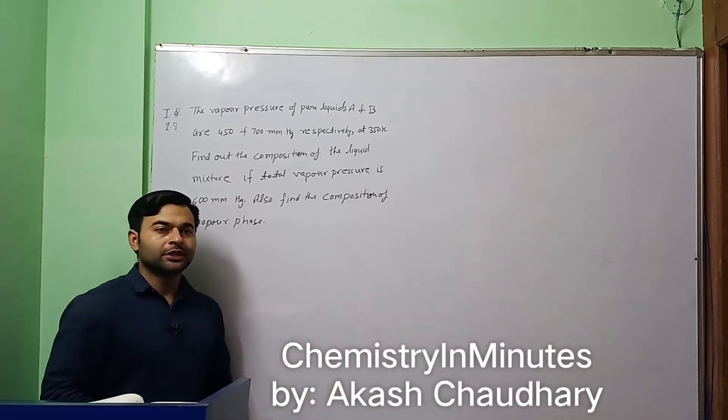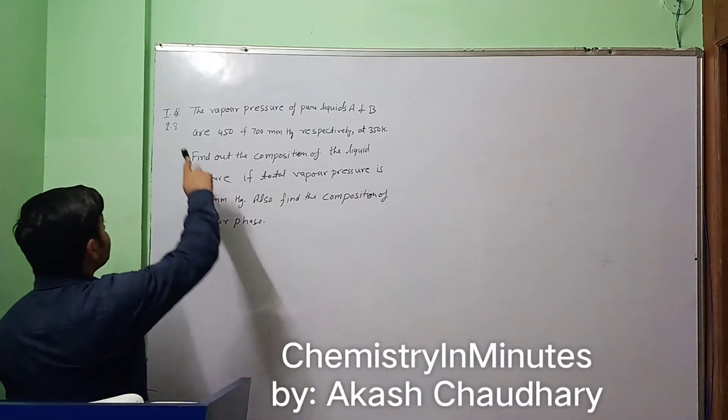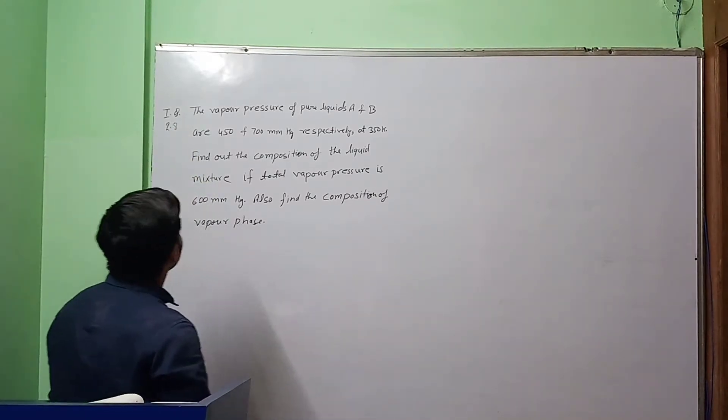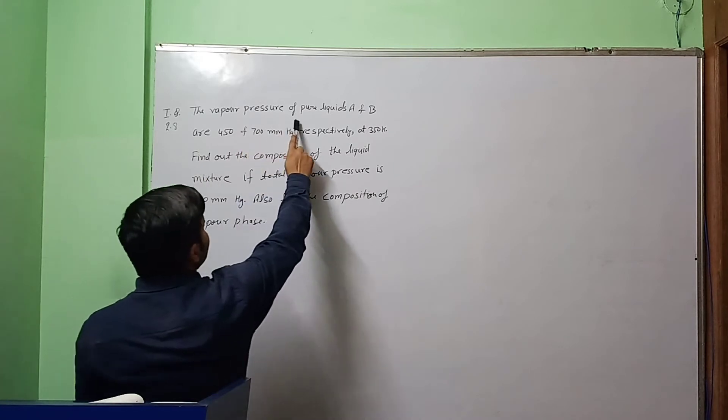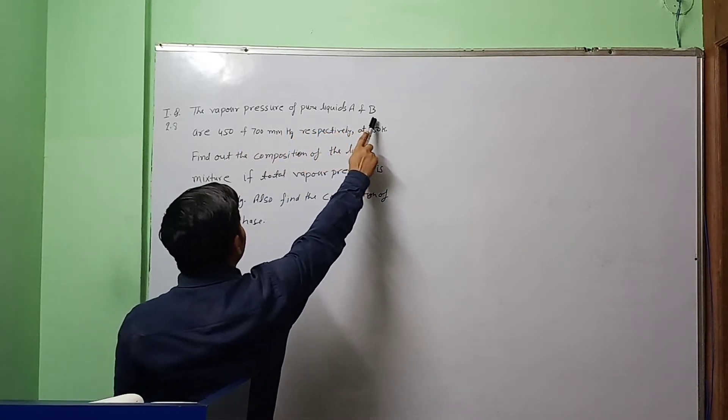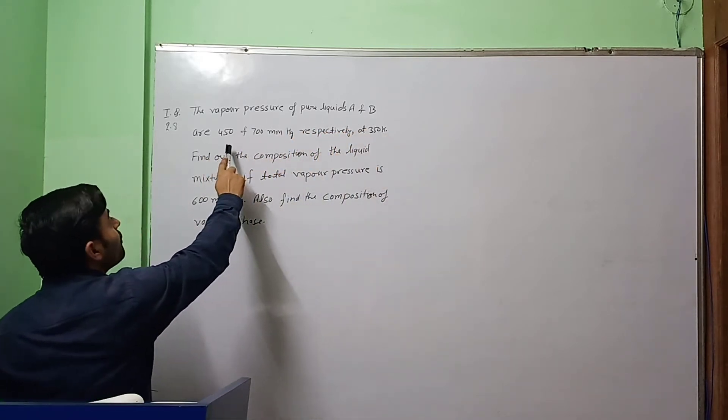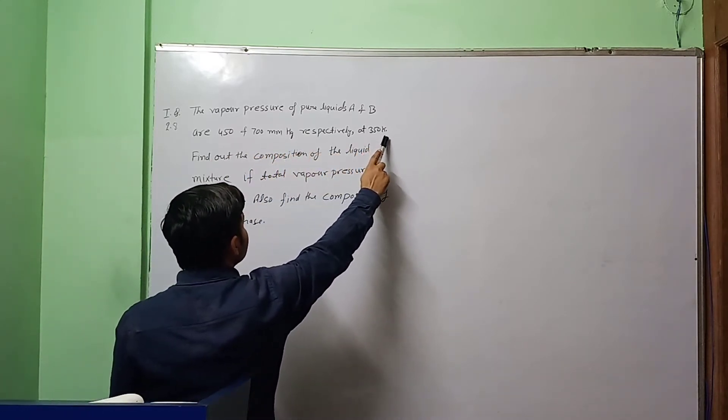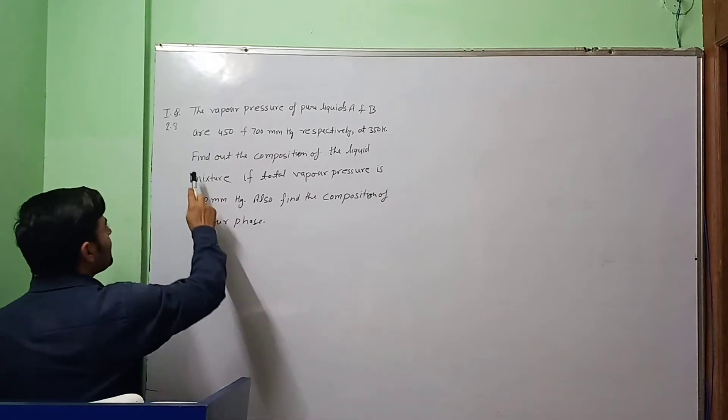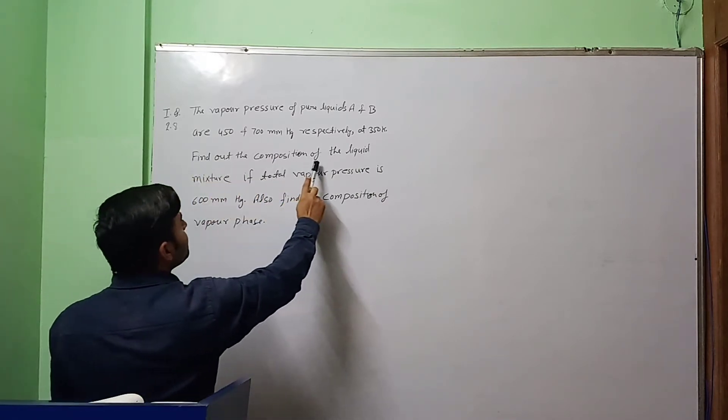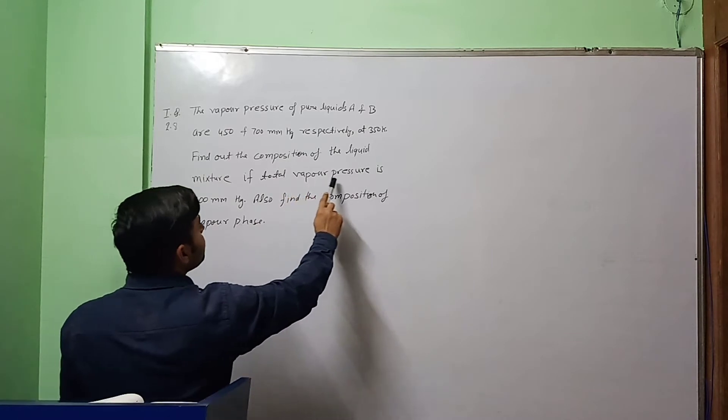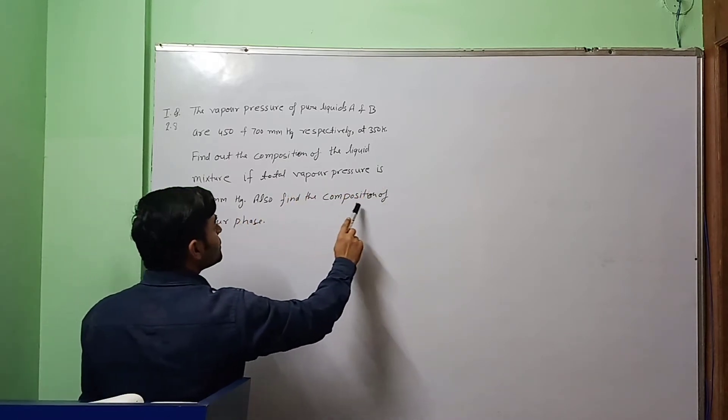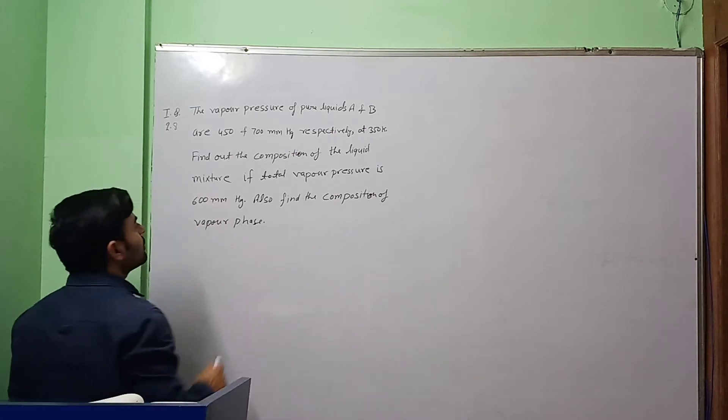The question now we are going to solve is in text question 2.8. The vapor pressure of pure liquids A and B are 450 and 700 mm Hg respectively at 350 Kelvin. Find out the composition of the liquid mixture if total vapor pressure is 600 mm Hg. Also find the composition of vapor phase.